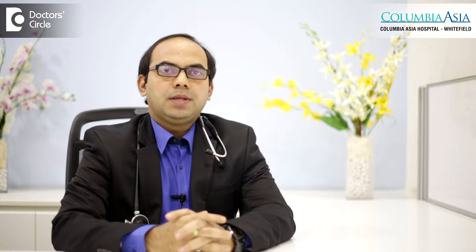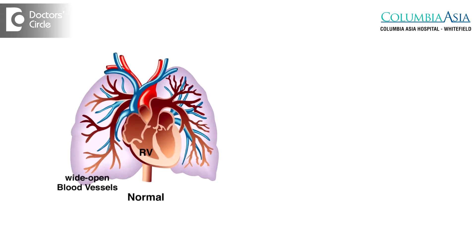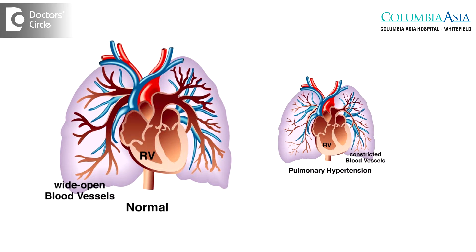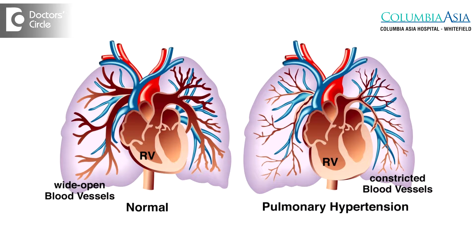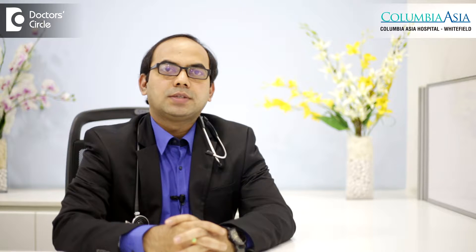Pulmonary hypertension is hypertension in the lung. There is a pressure buildup inside the lungs. The commonest cause, especially in children, is called idiopathic or congenital.